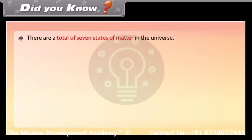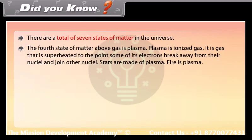There are a total of seven states of matter in the universe. The fourth state of matter above gas is plasma. Plasma is ionized gas — it is gas that is superheated to the point where some of its electrons break away from their nuclei and join other nuclei. Stars are made of plasma, and fire is plasma.